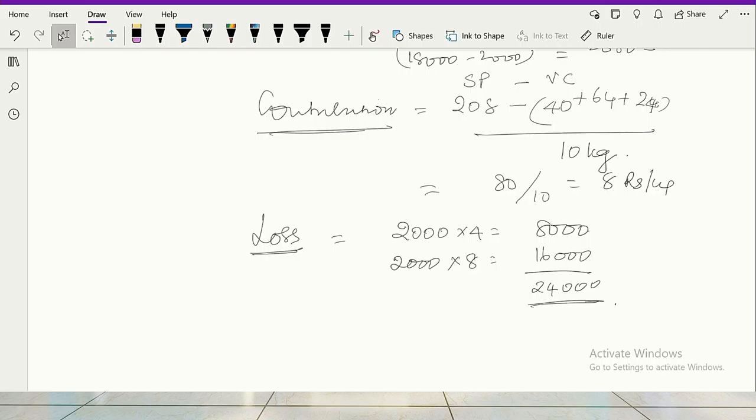So that means the actual loss is not just 4 rupees plus 8 rupees, 12 rupees, that is 24,000 is lost because of the production manager wastage. That is the concept because standard costing is based on fixing the accountability. So what is that? You understand?